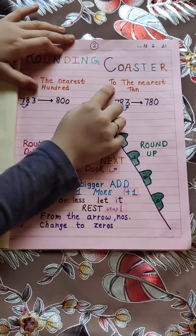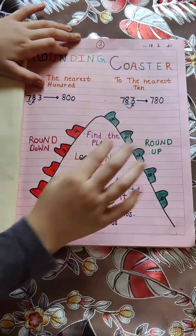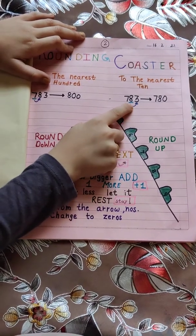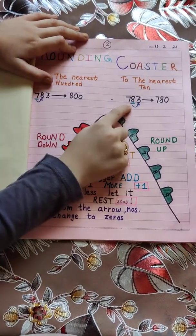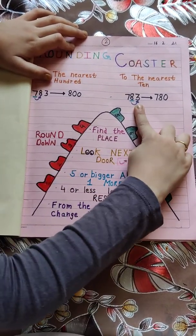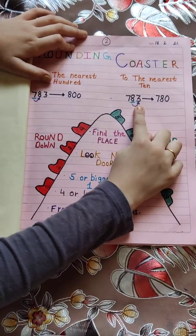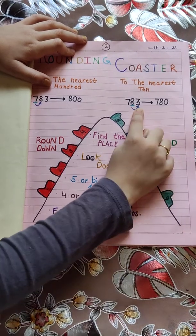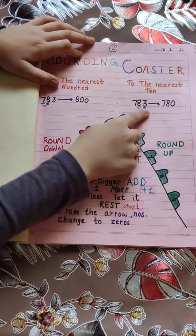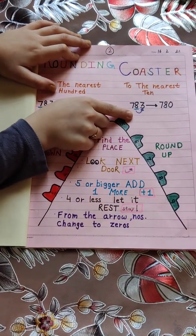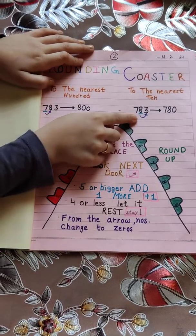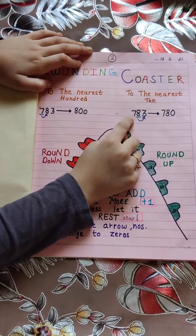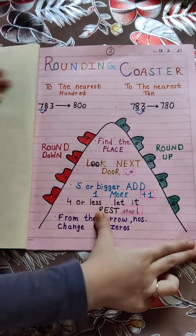Now we will see rounding to the nearest ten. We have hundreds, tens and ones. First, we will find the place at tens and look next door. Four or less, let it rest — the number is less than four, so the number will be written as it is. From the arrow numbers, change to zeros, so the arrow number will change to zeros and the other number is written as it is.